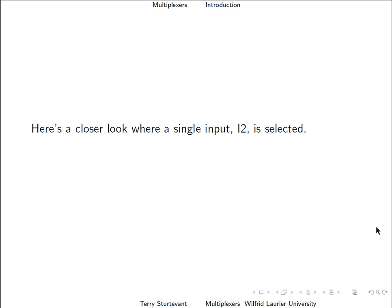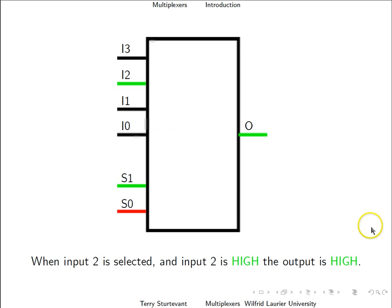Here is a closer look where a single input I2 is selected. When input 2 is selected, indicated by 1,0 on the select, and input 2 is high, then the output is high.